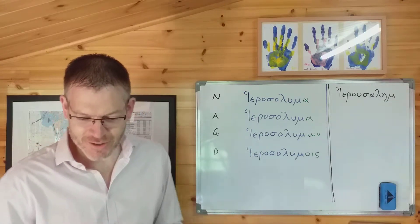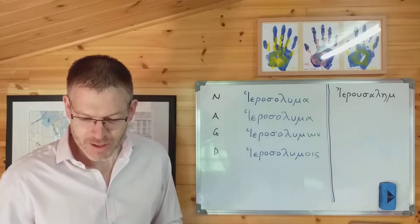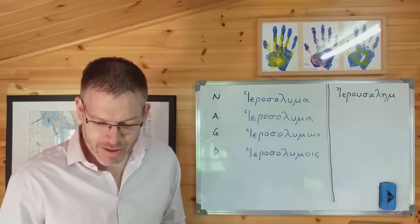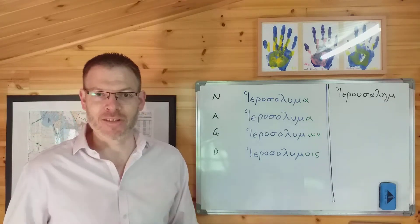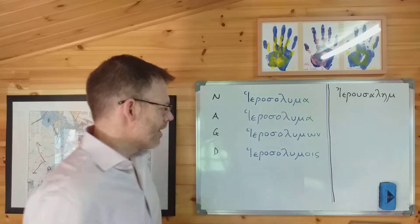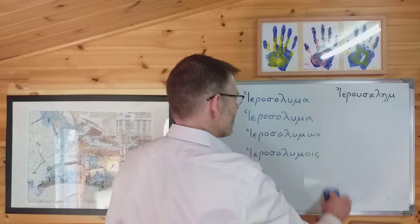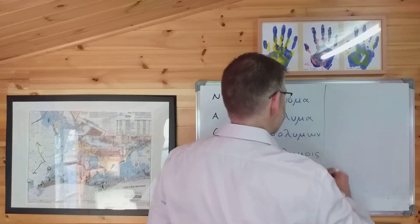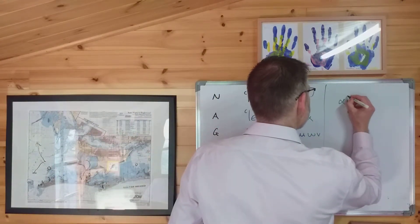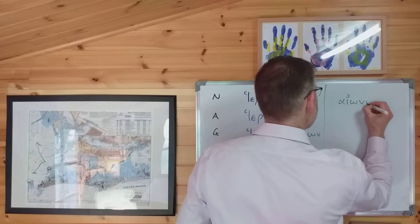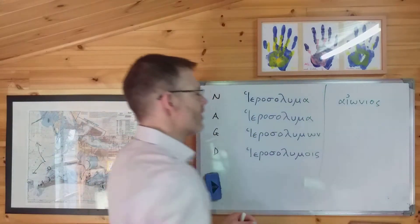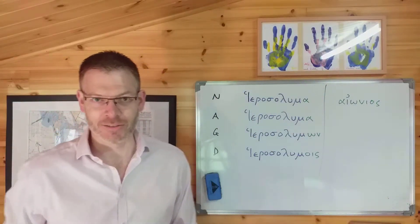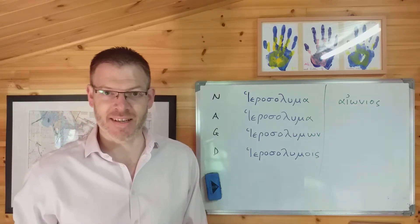Okay, so that's the first note, the two alternative words for Jerusalem. The second note is again on page 64, it's in the middle of the page and it concerns ionios, an adjective meaning eternal.